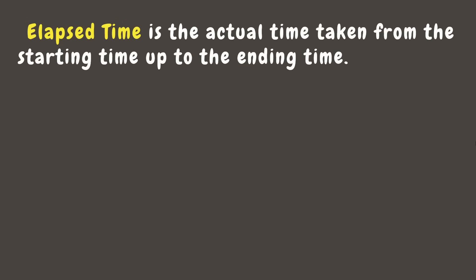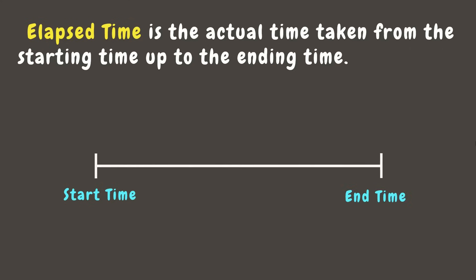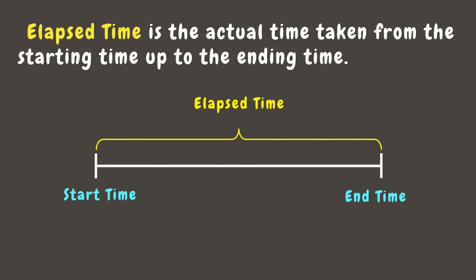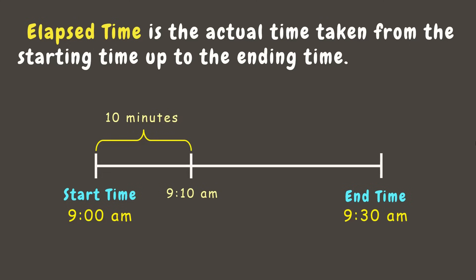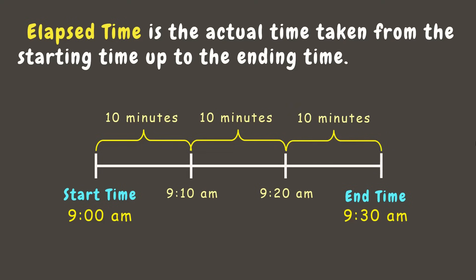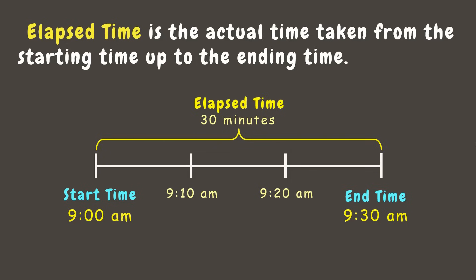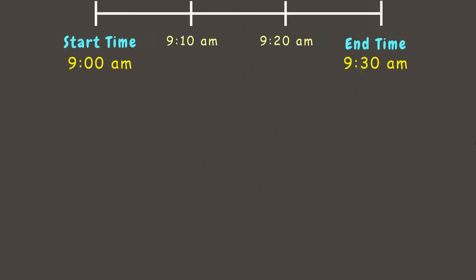Elapsed time is the actual time taken from the starting time up to the ending time. For example, if the start time is 9:00 AM and the end time is 9:30 AM, adding 10 minutes gives 9:10 AM, another 10 minutes gives 9:20 AM, and another 10 minutes gives 9:30 AM. Combining these, we have 30 minutes as the elapsed time.